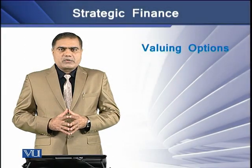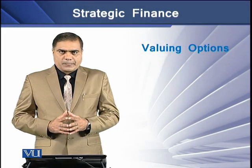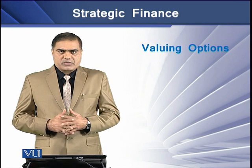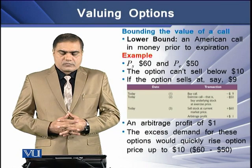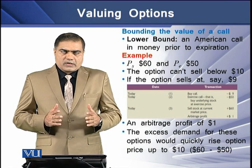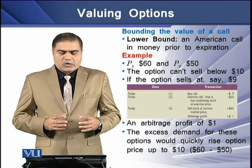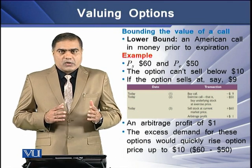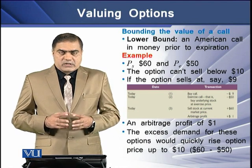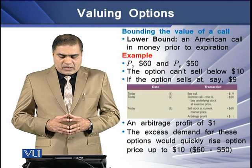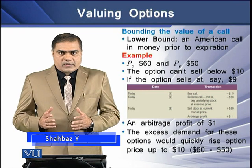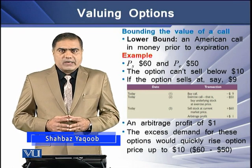The value of an option contract can be determined if an investor buys such a contract well before the expiration date. The value of a call can be determined using its upper and lower bounds. For the lower bound, consider an American call that is in the money prior to its expiration — for example, a stock price of $60 and an exercise price of $50.